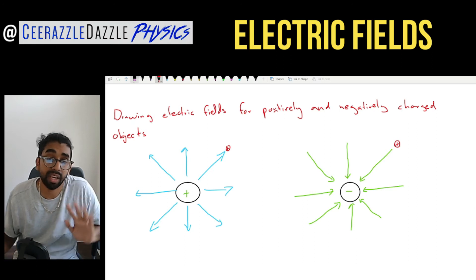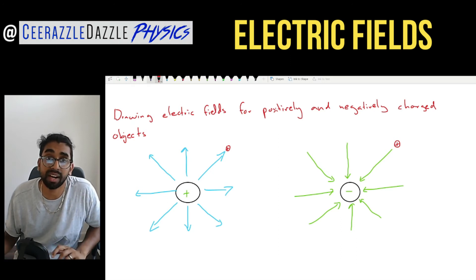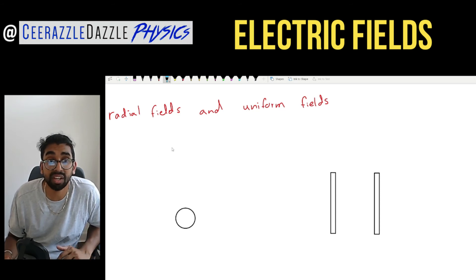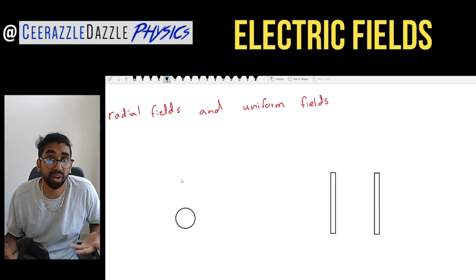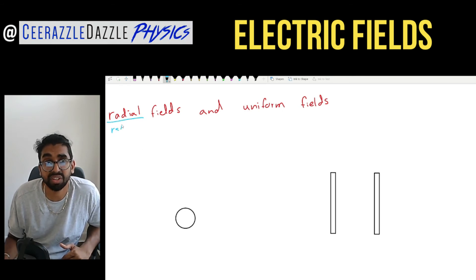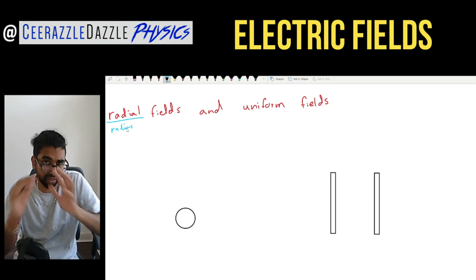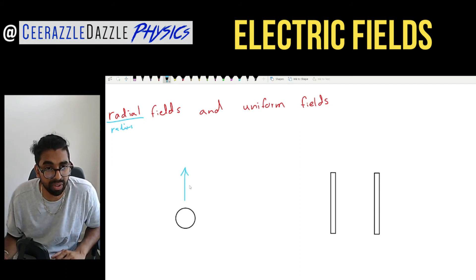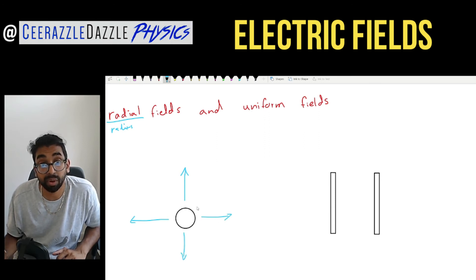There's one more thing — radial fields and uniform fields. There are two types of electric fields: radial and uniform. Radial — you should be thinking of the word radius, meaning round or spherical. This one here is a radial field. Imagine it in 3D — imagine an object in your hand which was positively charged, and the arrows would go away from it radially.